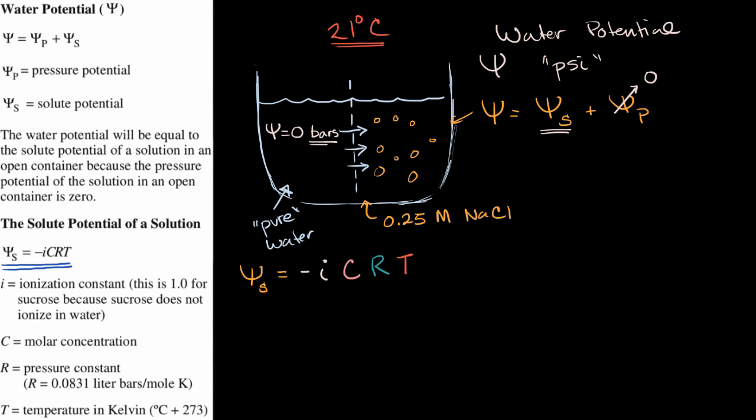So first, let's start with i. This is going to be negative because all of these are going to be positive values. So i is known as the ionization constant. And one way to think about it is, for every molecule of solute, how many molecules does it disassociate into when you put it into the water?